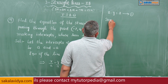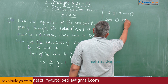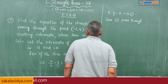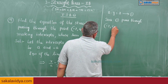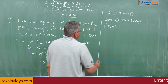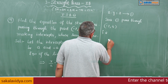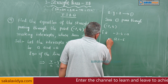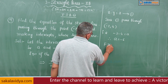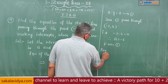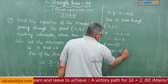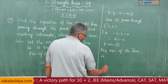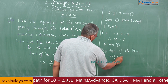Since equation 1 passes through the point minus 2 comma 4, we get minus 2 minus 4 is equal to a. So a is equal to minus 6. From equation 1, the required equation of the line is x minus y is equal to minus 6.